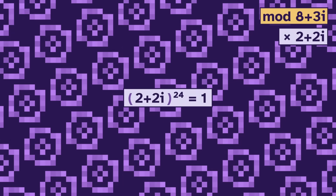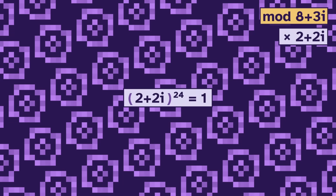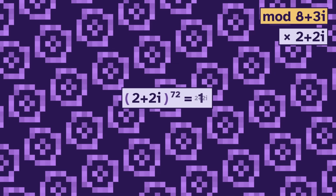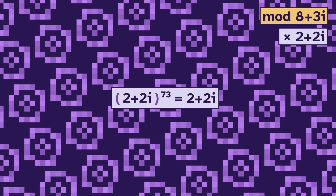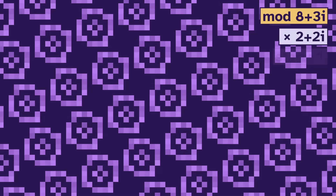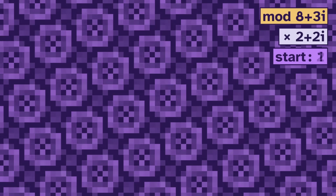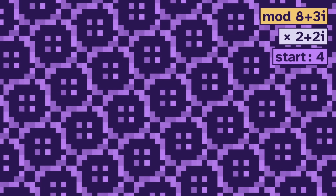If we multiply by 2 plus 2i, we get a loop length of 24. So then 2 plus 2i to the 24 is 1, and we can cube both sides and get the little theorem. And because we had to cube both sides, there must be three different loops. We get one loop if our starting point is 1, a different loop if we start with 2, and a third loop if we start with 4.